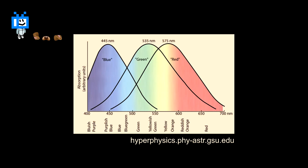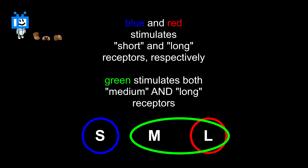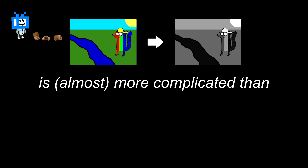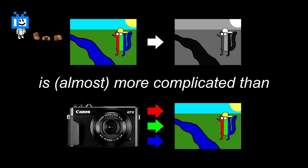The reason there are twice as many green dots is because we are more sensitive to green light — like, way more. Actually, we have different sensitivities for each color. This is why, oddly enough, turning a color image into black and white is almost a little more complicated than the opposite.